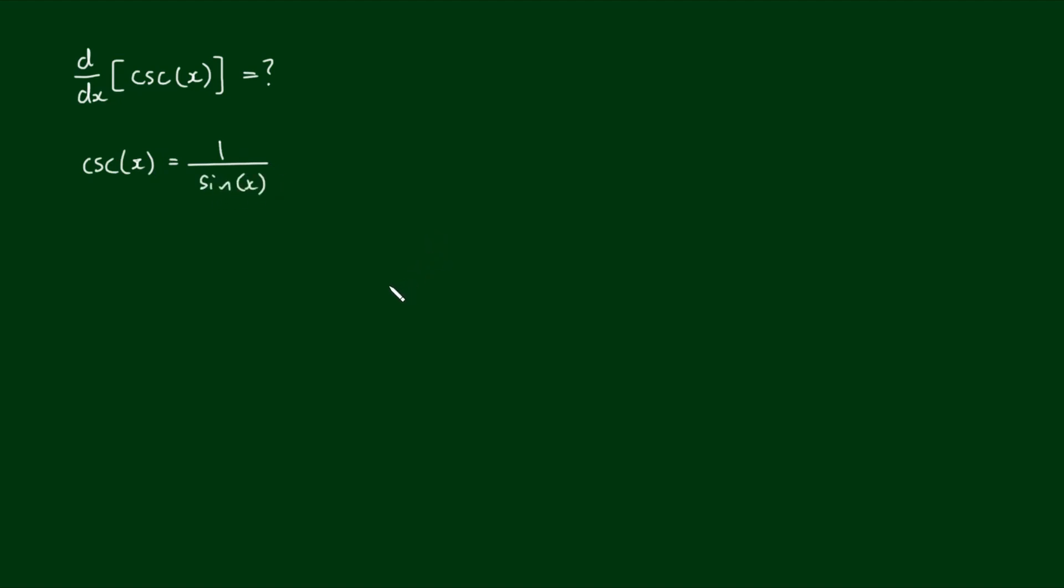So it follows then to find the derivative, we would use the reciprocal rule. And in a previous video, we derived and proved the reciprocal rule as f', the derivative of f, is equal to negative of g' divided by g squared of x.